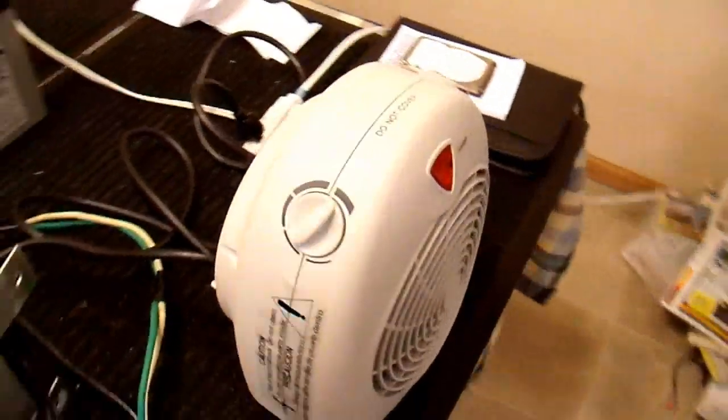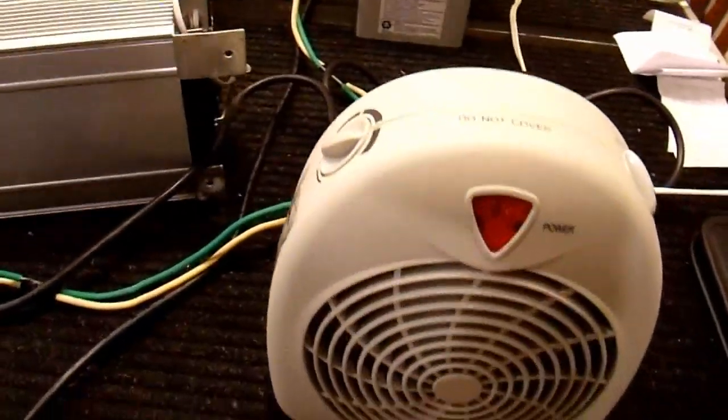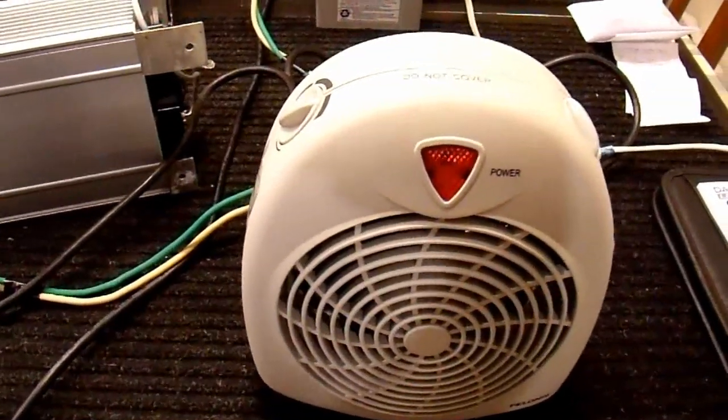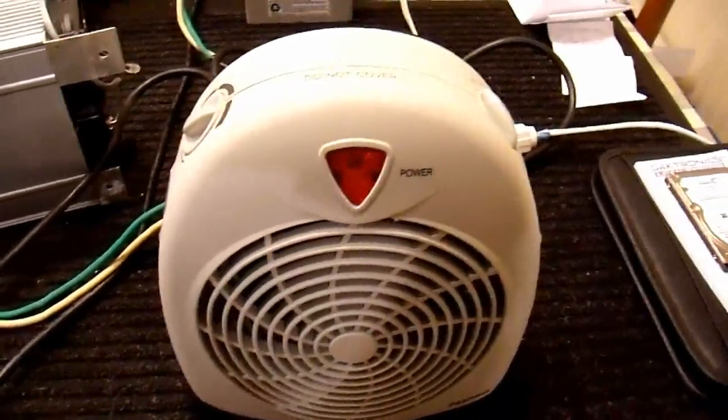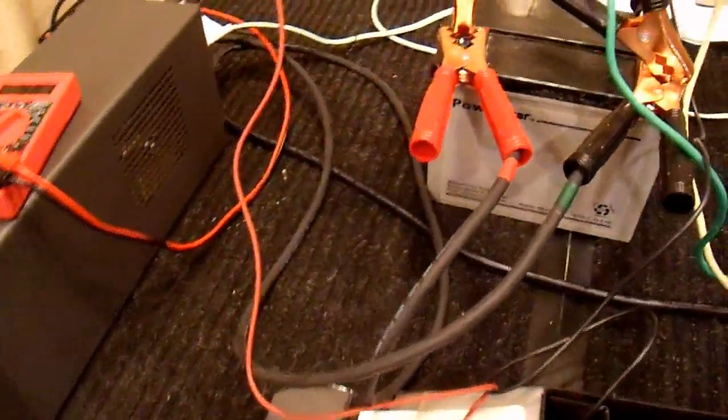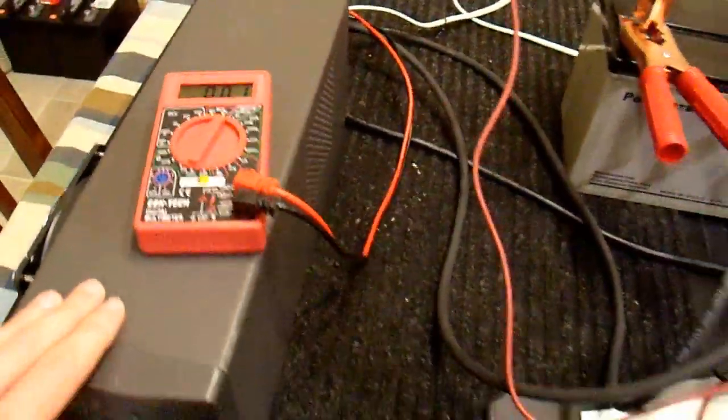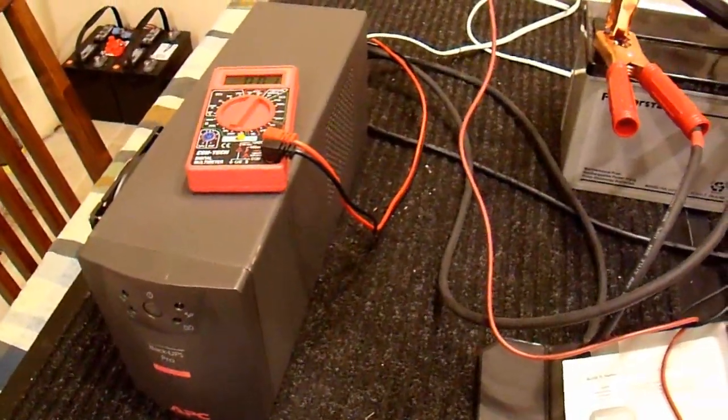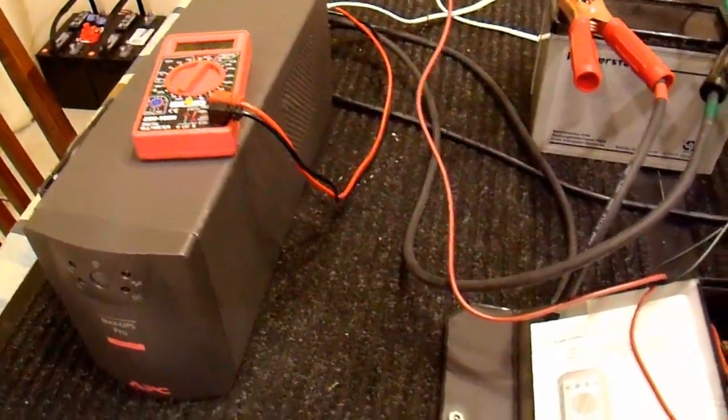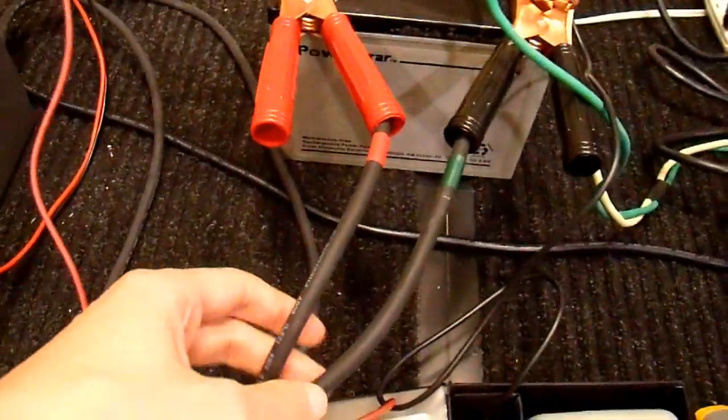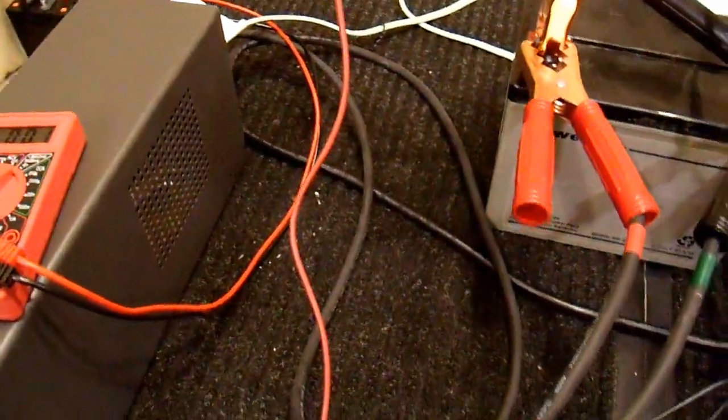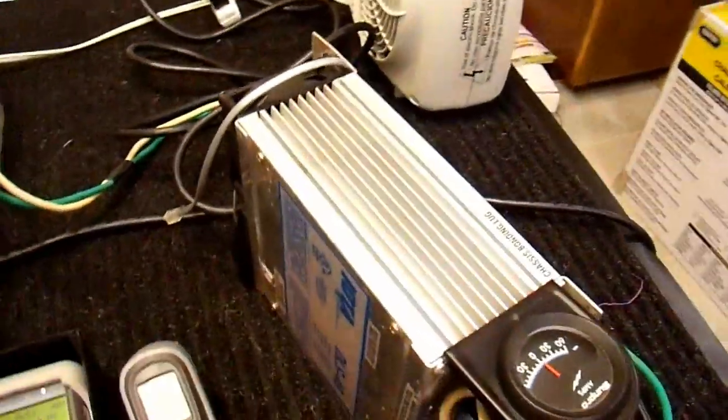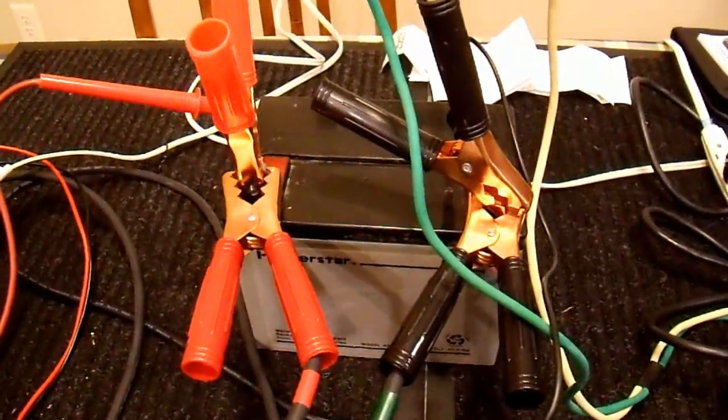And my load for this test is going to be this electric heater that I've used in some of my other videos. If I put this on low, it is about 600 watts. And I've checked with the clamp meter what this UPS draws from the battery at that 600 watt load. And it takes about 60 to 65 amps of load through the input cables there.